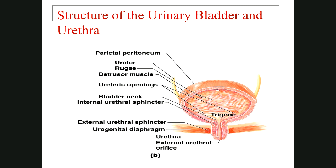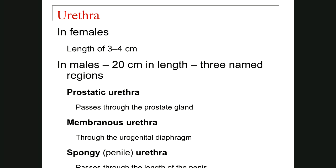In the female, there is an internal urethral sphincter and an external urethral sphincter. In the female, the urethra is about three to four centimeters, while in the male it is about 20 centimeters.